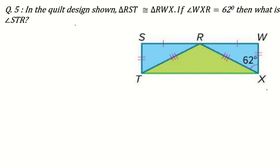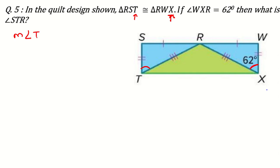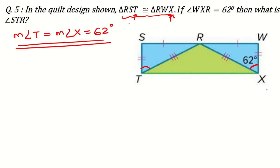Another question: in the quilt design shown, triangle RST is congruent to triangle RWX. If angle WXR is 62 degrees, what is angle STR? They have given us angle X, which is at the third position in triangle RWX. In triangle RST, T is also at the third position. So angle T equals angle X, which equals 62 degrees. If you understand the congruency statement property, it is very easy to find the answer.